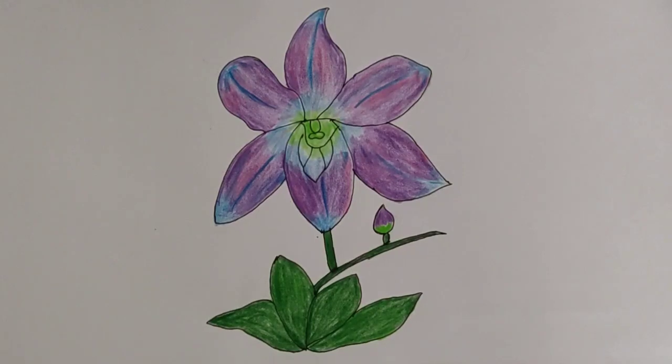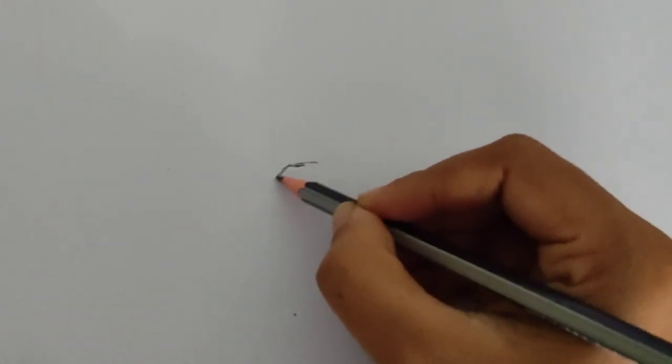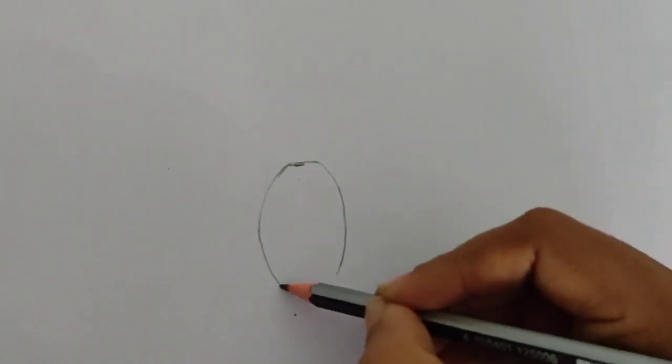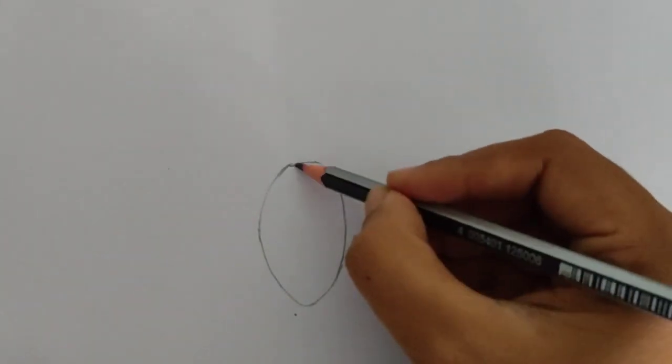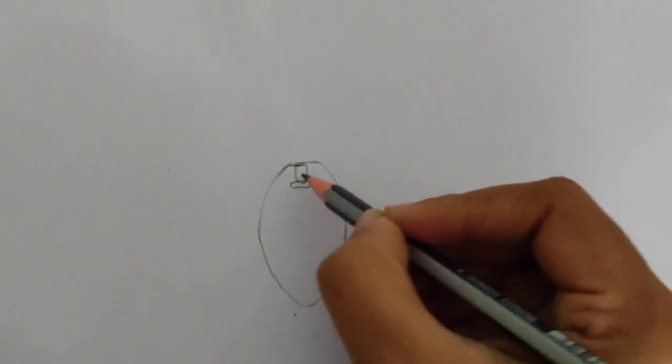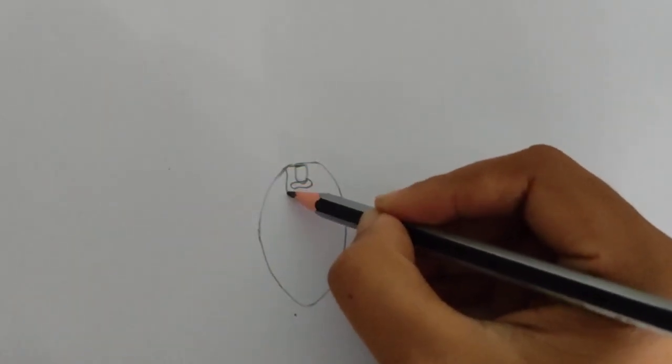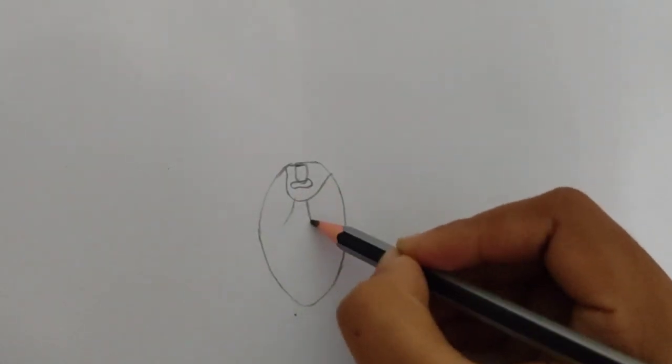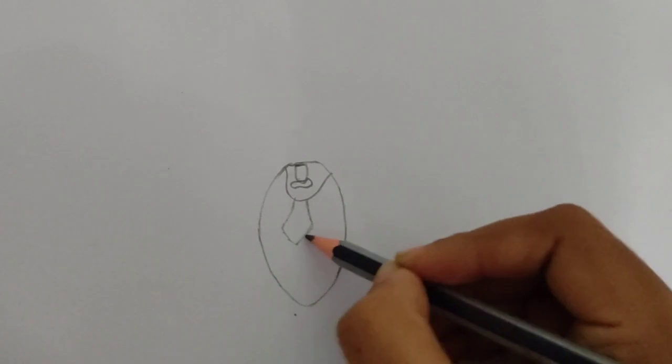Hello viewers, how are you? Hope you are fine. Welcome to my channel, Drawing Time with a Story. Today I am going to show you how to draw a blue orchid flower, a lovely flower. This flower is really rare but its beauty is so magical that you can't move your eyes from these beautiful elegant flowers. While drawing, let's know some information about this beautiful flower.